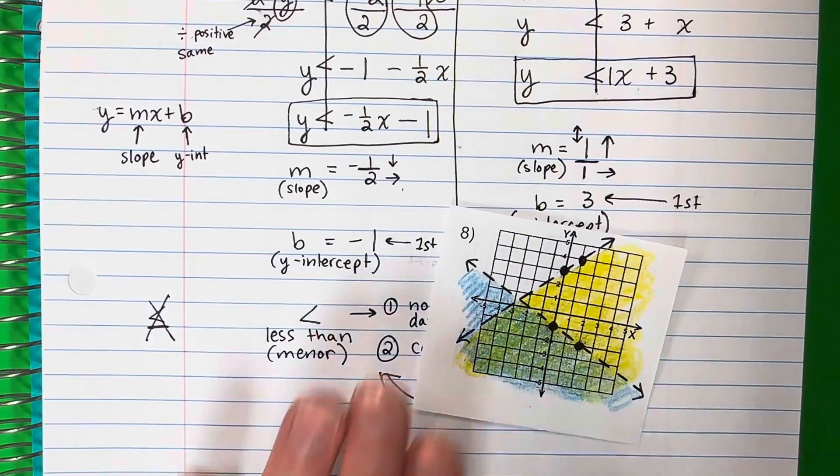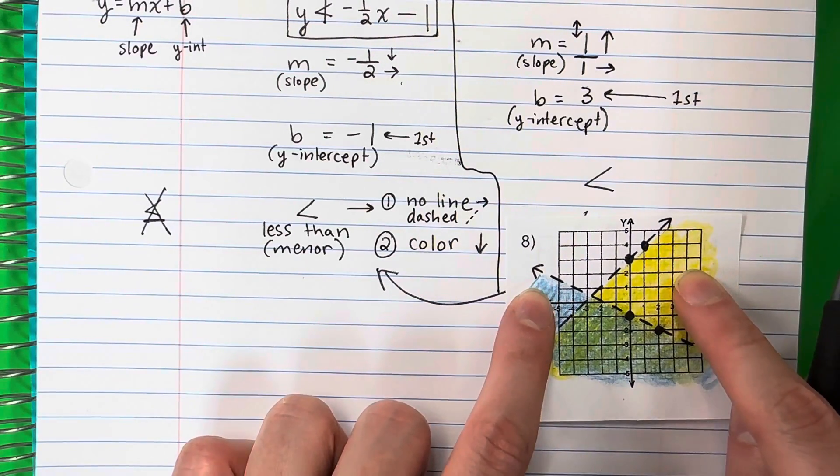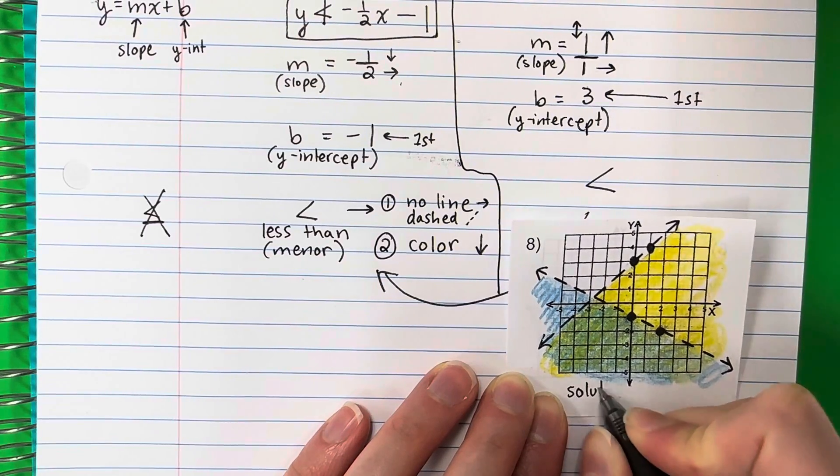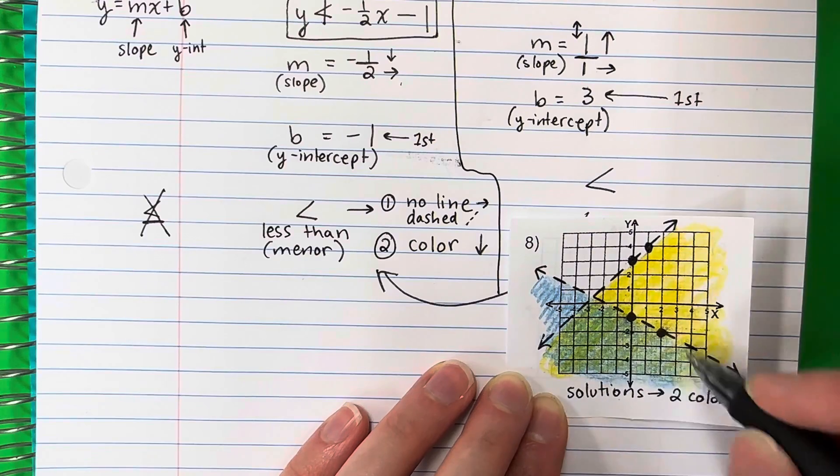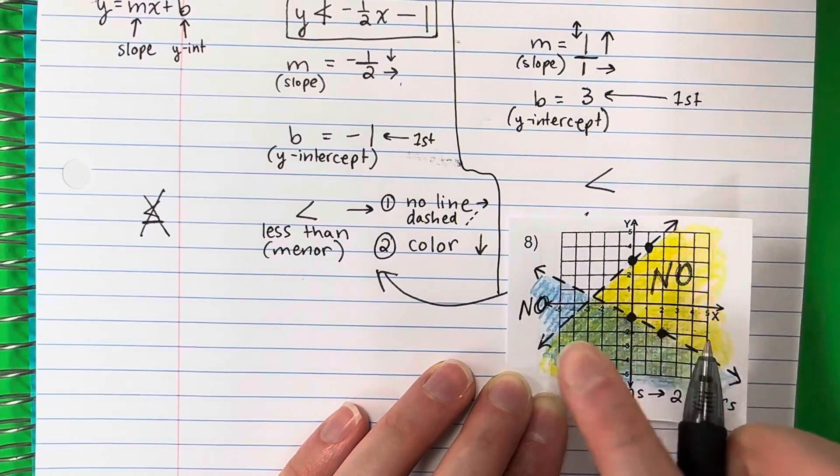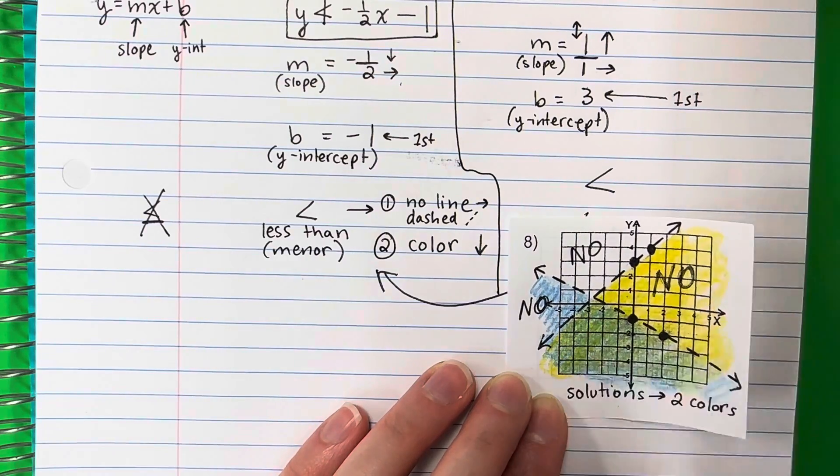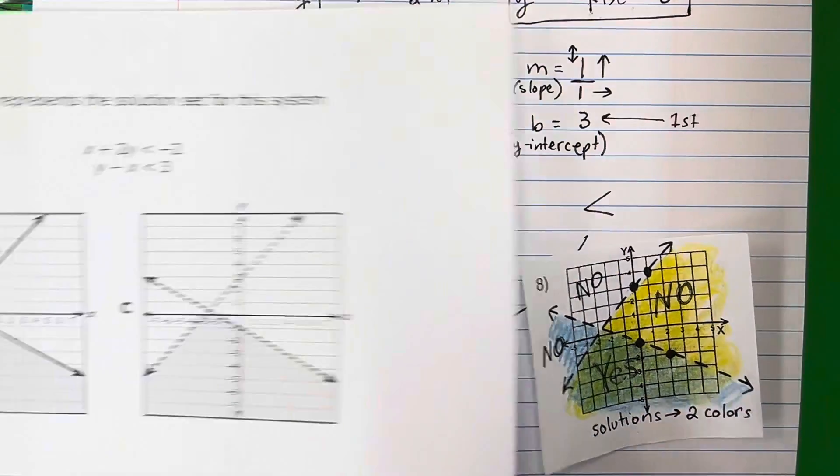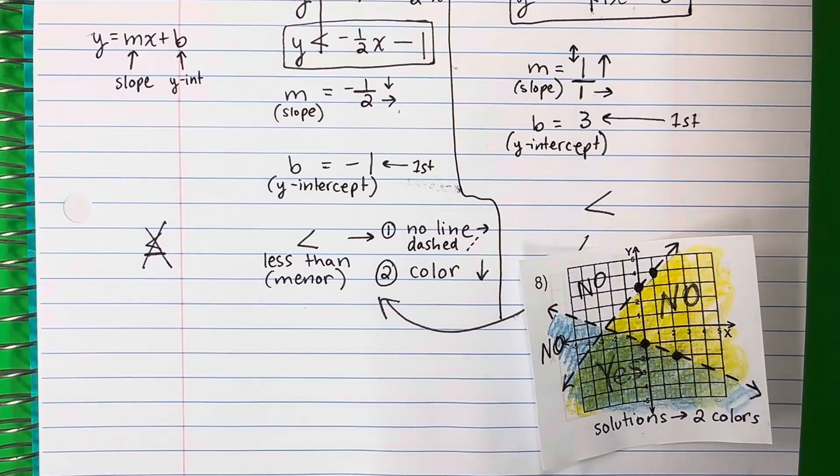So now I have some colors. I have no color, one color, two places with one color, and two colors which is right over here. This is where my solutions are. Solutions have two colors. This is my answer, right here. This is not a solution because it has only one color. Here too, no solution because it has one color. Here also no because it has no color. So two colors is where your solutions are. Why two? Because I have two equations. Two equations, two colors. Three equations, three colors.